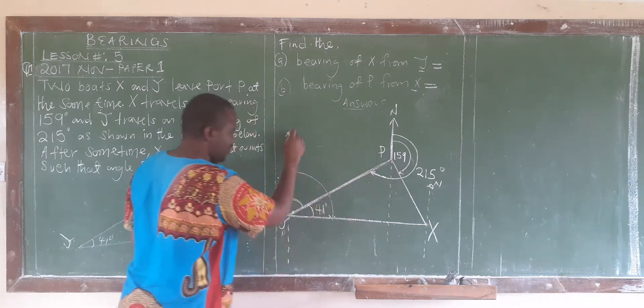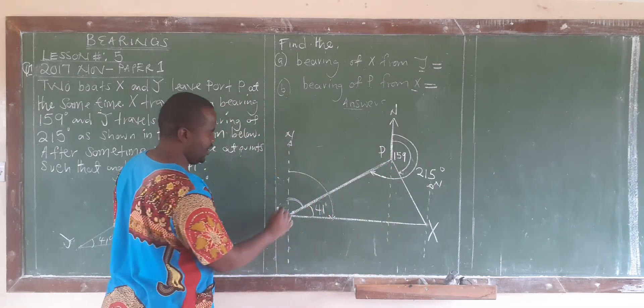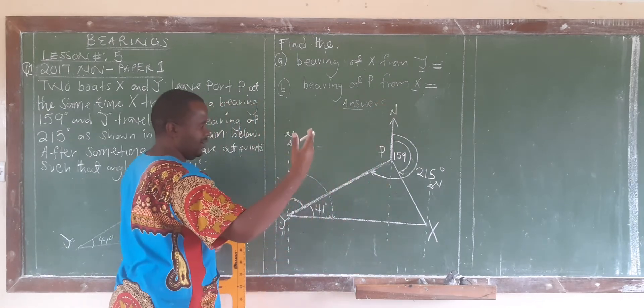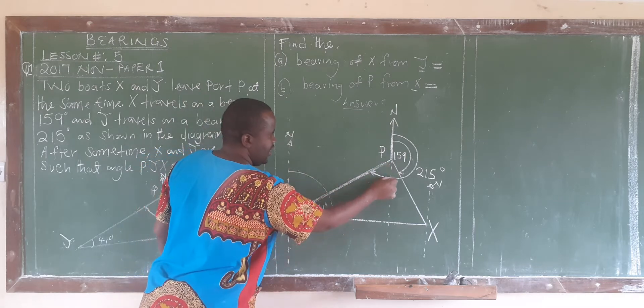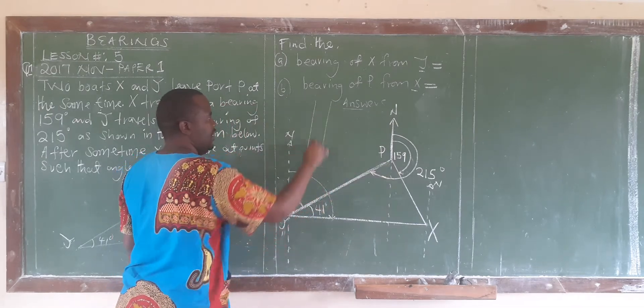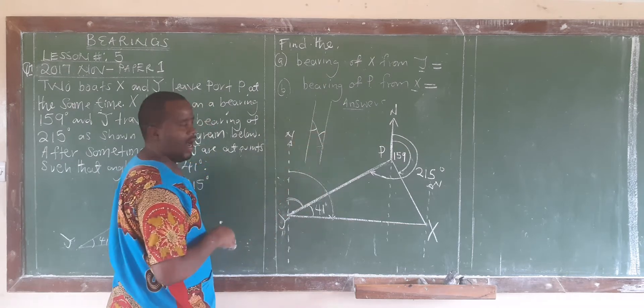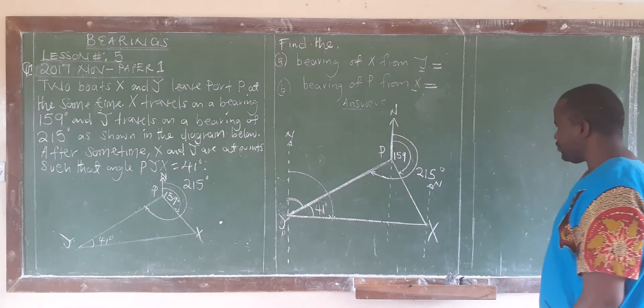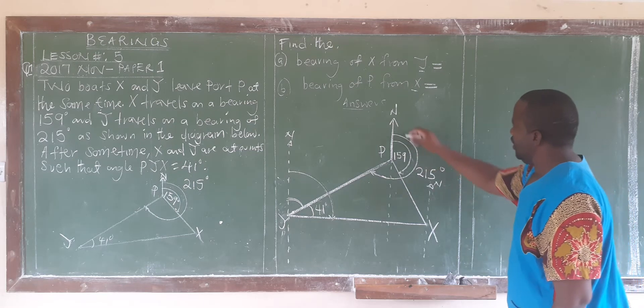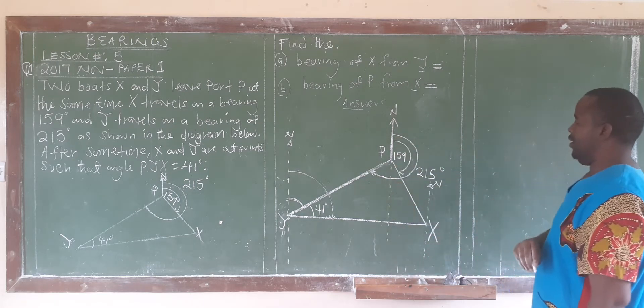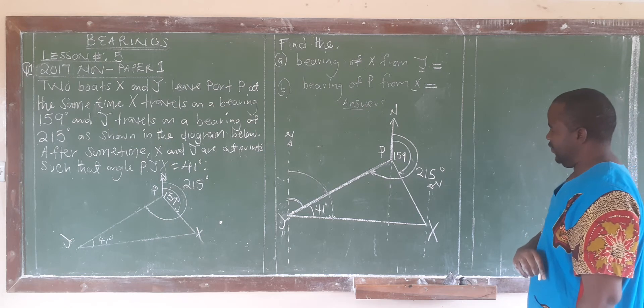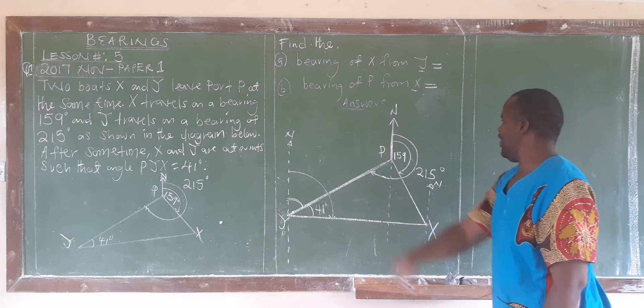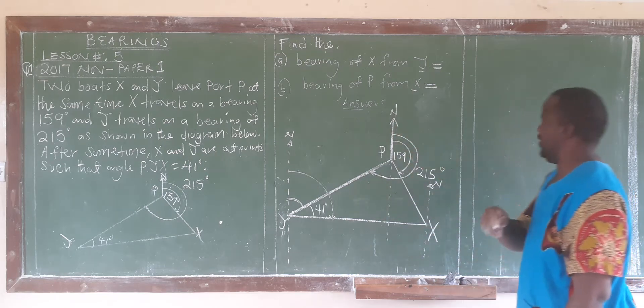We can come to this part and try to utilize the concept of alternate angles. If these lines are parallel lines and this is the transversal, really like this angle and this angle are alternates. We need to find this. And now, how do we find it? We know that angles on a straight line add up to 180 degrees.